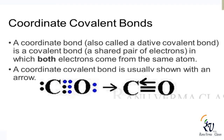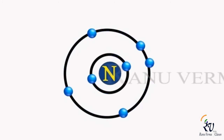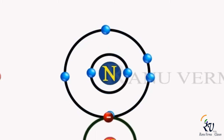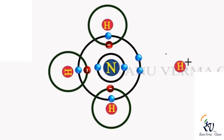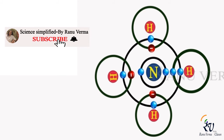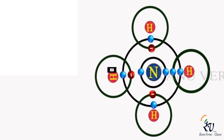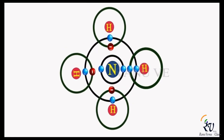Here is another example. Nitrogen has 5 electrons in its outermost shell. Out of 5, three are shared with 3 electrons from hydrogen atoms to form a bond. Now nitrogen has 1 pair of free electrons. If a hydrogen ion — that is, a proton — approaches nitrogen, nitrogen will provide both electrons to form a bond with the hydrogen ion. The hydrogen ion does not give any electron; it doesn't have any electron. I hope you know the name of this molecule — please write it in the comment box.